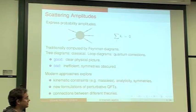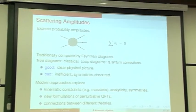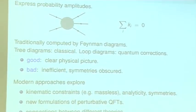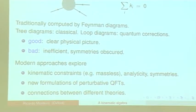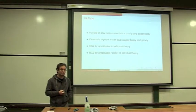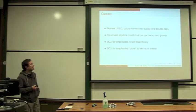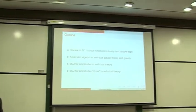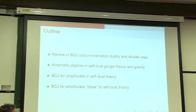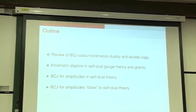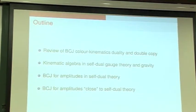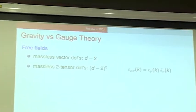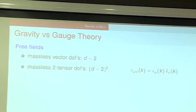Modern approaches explore many things to overcome this, using formalisms which impose kinematic constraints — such as the fact that particles are massless — and explore the analyticity of amplitudes as a function of external data and the symmetries the amplitude should have. This has led to new formulations of perturbative quantum field theories and to the acceleration of connections between different theories. I'll be focusing on this: a review of BCJ, the kinematic algebra in self-dual gauge theory and gravity following Donald's talk, and how this appears in scattering amplitudes in several examples.